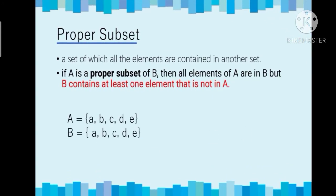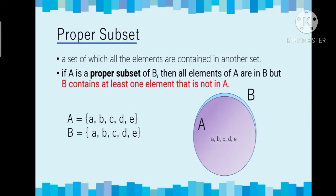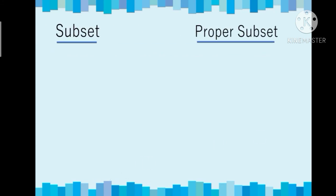Another example: A has elements {a, b, c, d, e} and B also has elements {a, b, c, d, e}. You will notice that all the elements in A are also elements of B, but it fails the definition that B contains at least one element that is not in A — walang natira, lahat element. So we can say that A is not a proper subset of B.